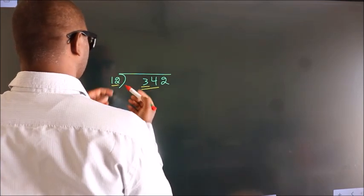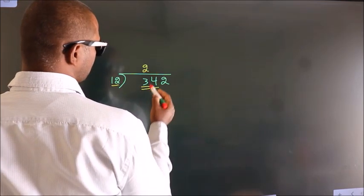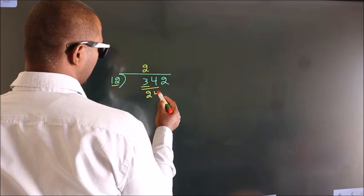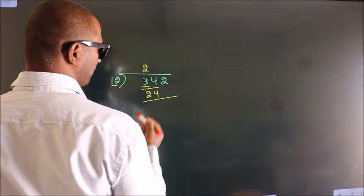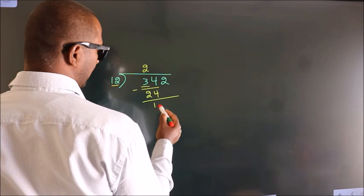In the 12 table, 12 times 2 is 24. Now we should subtract. We get 10.